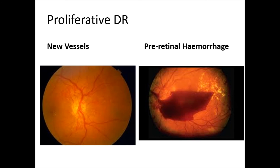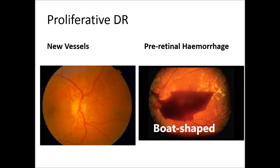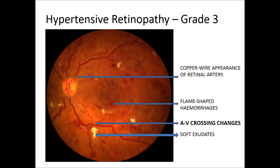Proliferative diabetic retinopathy shows new vessels which may arise from the disc or from any of the vessels elsewhere, or a boat-shaped pre-retinal hemorrhage. Hypertensive retinopathy: look out for arteriovenous crossing changes. The veins normally course underneath the arteries and may be concealed, deflected, tapered at either end, or show venous engorgement in the distal portion.